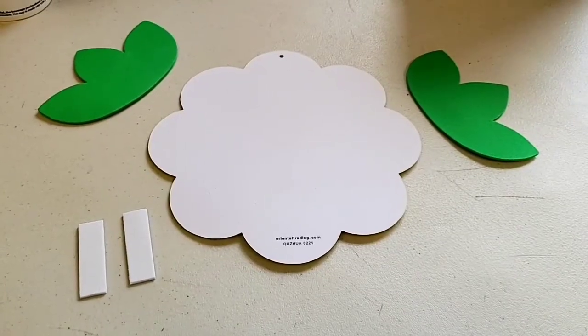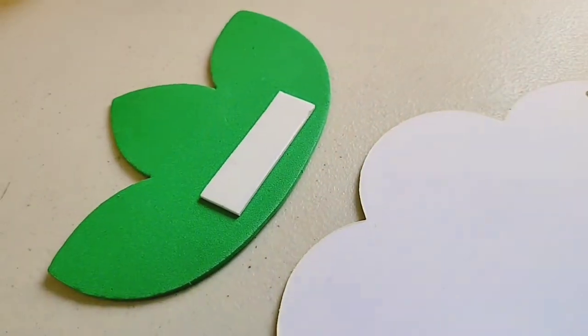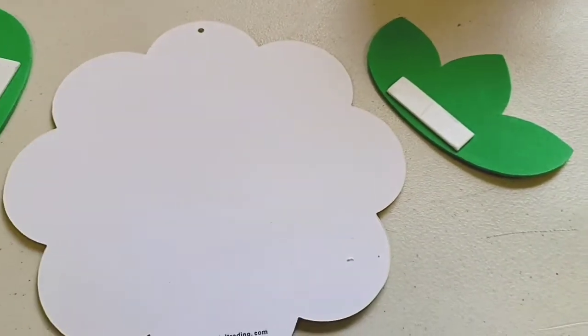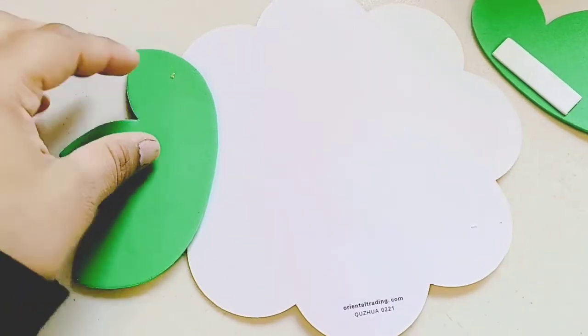And now we flip the sunflower over, put the double-sided tape on the leaves, on both leaves, and then put the leaves on the edge of the sunflower.